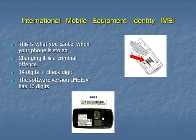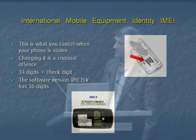If you look inside the phone it's this long number here. Changing it in the UK is a criminal offence. It has a structure of 14 digits plus a check digit. There's a software version that you occasionally see which has got more digits, so it's this nasty little tiny number looking here.